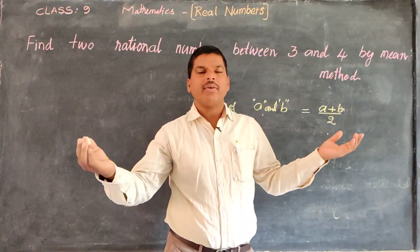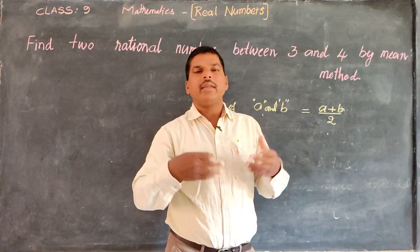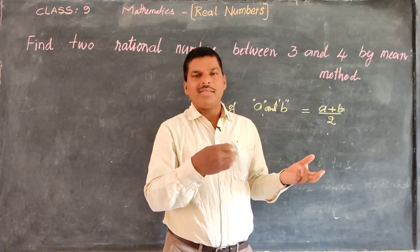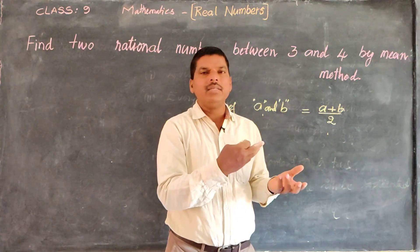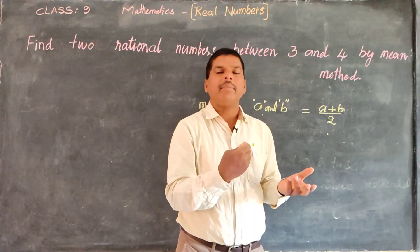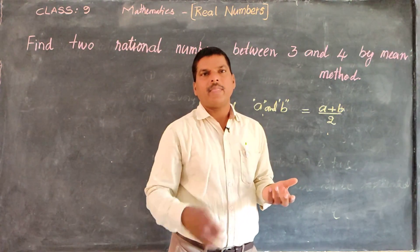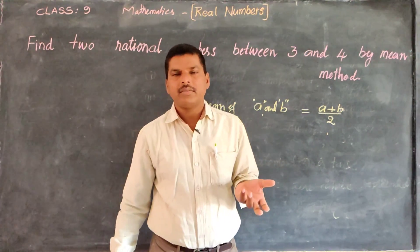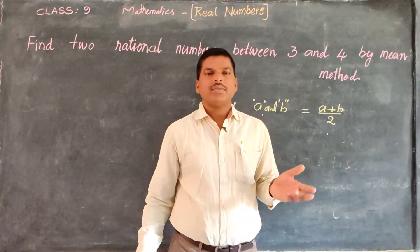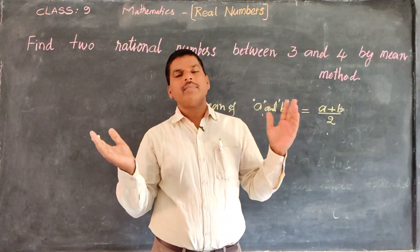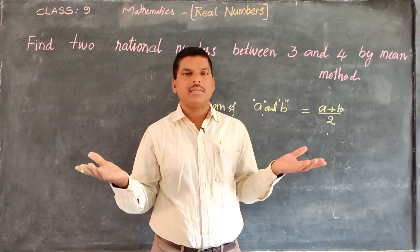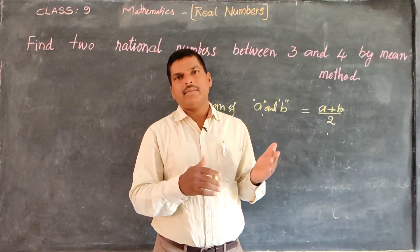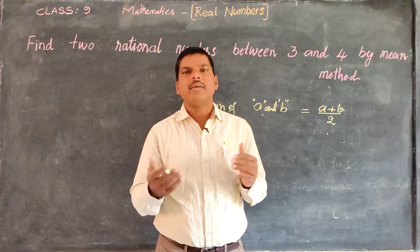If you take three numbers A, B, C, the mean of these three numbers is A plus B plus C by 3. If you take four numbers, the mean is the sum of the four numbers by 4. If you take 10 numbers, it is the sum of the 10 numbers by 10. So this is the mean.